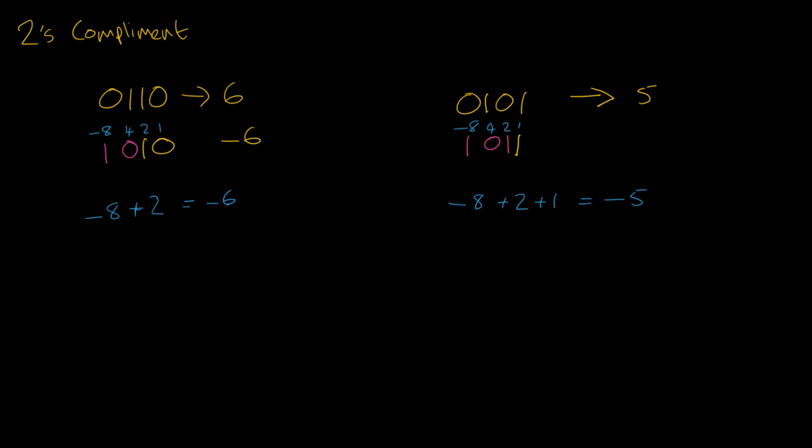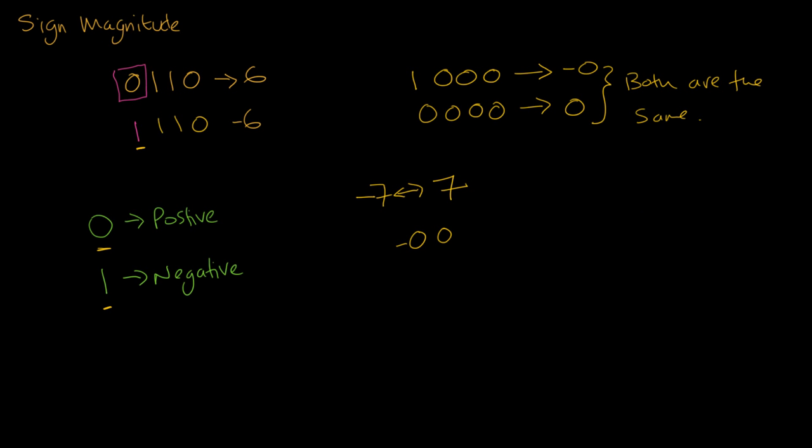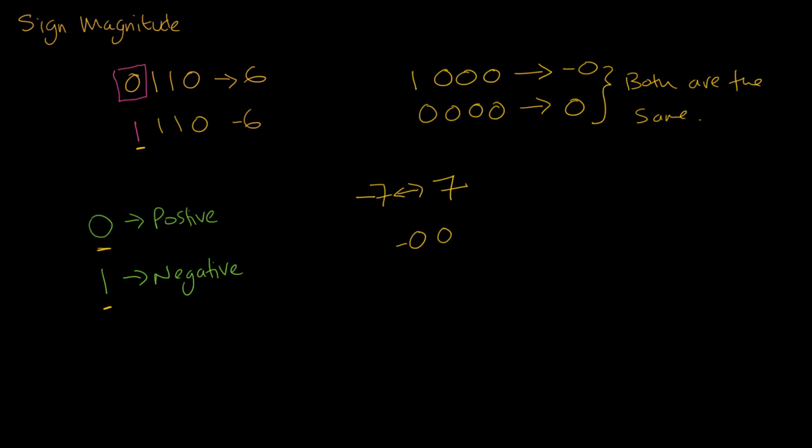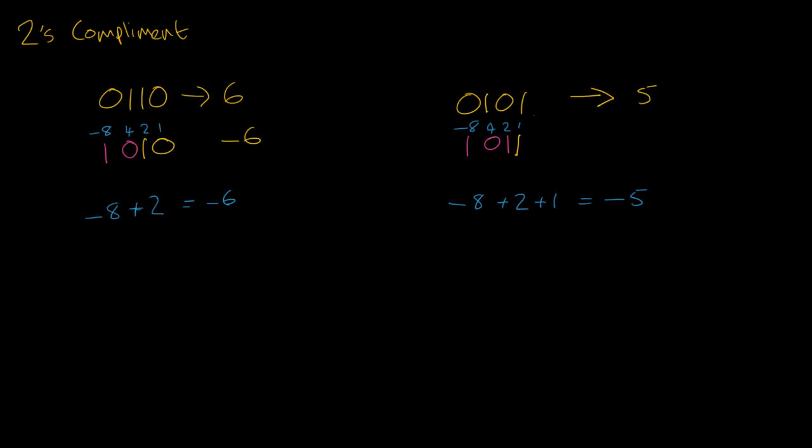So unlike sign magnitude, where you just show the negative number is represented by the first digit, or the first bit, a 1 being a negative, a 0 being a positive, in 2's complement, the first bit is the minus version of the positive, and then you can just add the others.